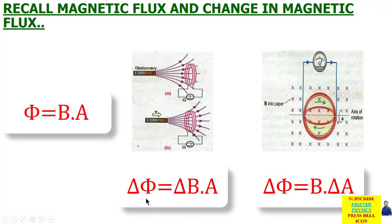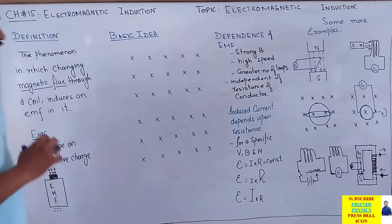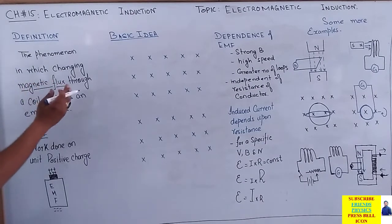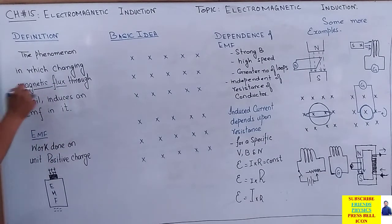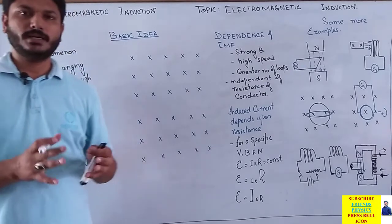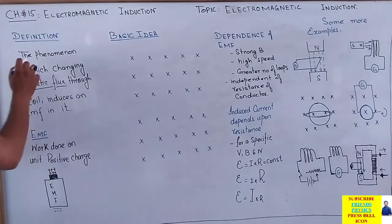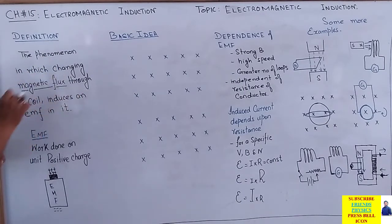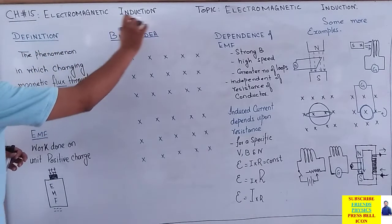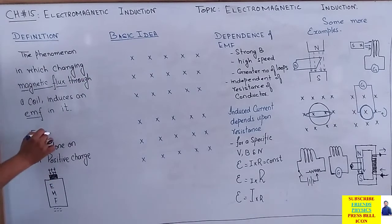Chapter 15 کی base — Chapter 15 کی roots ساری کی ساری یہ چھوٹی سی slide ہے: whenever there would be a change of magnetic flux with respect to time, an EMF will be induced in the given circuit. تو یہ change کا concept یاد رکھنا ہے۔ اگر area کی amount change ہو یا magnetic field کی amount change ہو تو اسے change in magnetic flux کہتے ہیں۔ So the phenomena in which changing magnetic flux through a coil induces an EMF in it — this phenomena is called electromagnetic induction۔